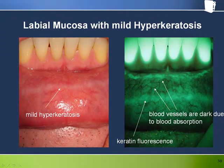An analogous phenomenon to linea alba on the buccal mucosa can occur on the labial mucosa due to irritation from the front teeth. In this case, we see classic mature non-inflamed hyperkeratosis, which appears brighter under the Velscope due to keratin fluorescence. Note also how well the dense collections of blood vessels can be visualized under fluorescence due to loss of fluorescence from blood absorption.